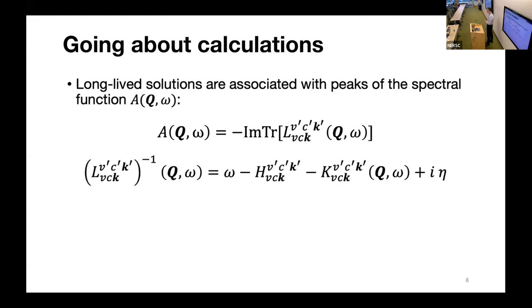We can write an equation for L inverse, which involves that Bethe-Salpeter Hamiltonian I showed earlier, and the interaction kernel related to the non-instantaneous approximation. So we can easily construct L inverse, and then the challenge is inverting this giant matrix to get L and then taking the trace.